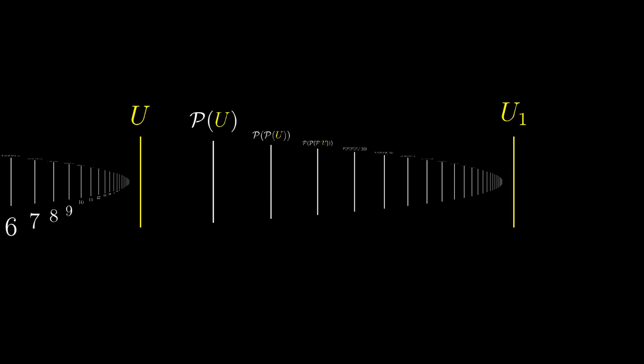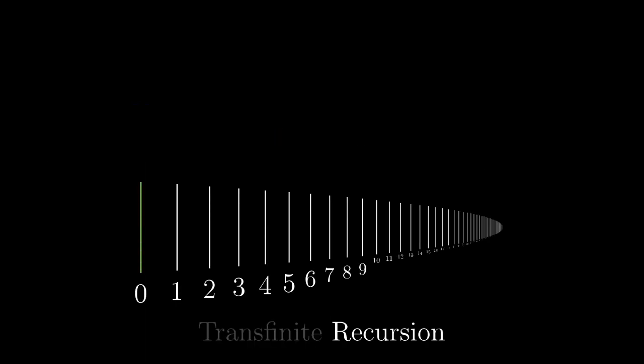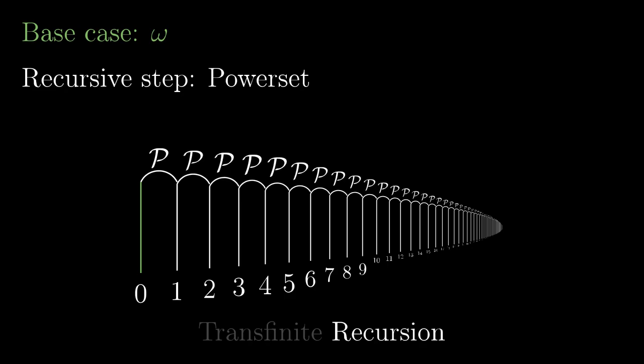The process happening here is called transfinite recursion and it is one of the key concepts of set theory. An ordinary recursion lives on natural numbers. We define the thing we start with, in our case omega, it is called the base case and then we define the recursive step, it is in our case taking the power set of the previous set.